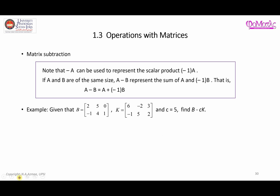Now let's talk about matrix subtraction. Notice we have the notation negative A, the negative of a matrix. We can think of negative A as the result of multiplying −1 with matrix A, where −1 is considered a scalar. Therefore, A minus B is the same as viewing it as A plus (−1)B — you are adding two matrices where the second matrix is first multiplied by −1. That's another way of viewing the subtraction process.